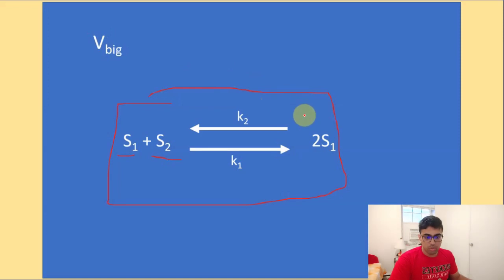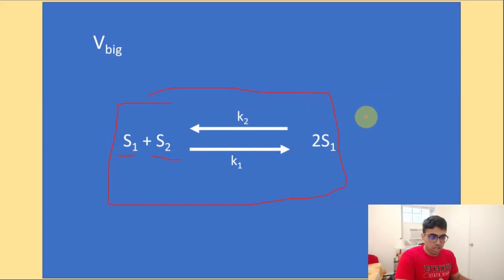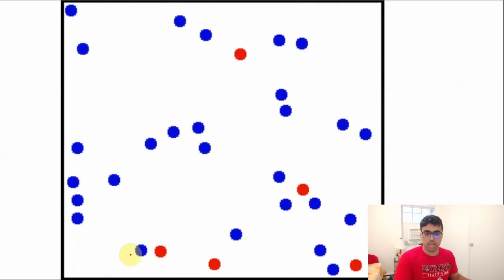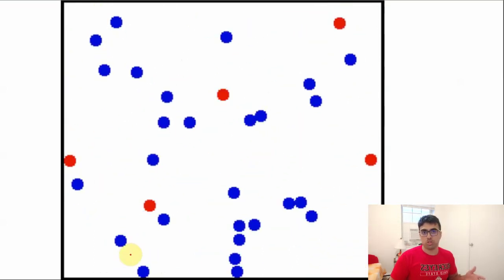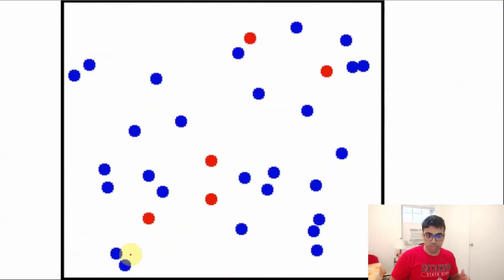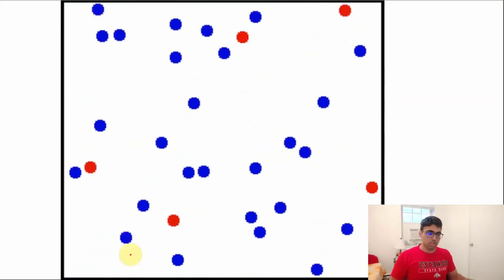Given some details like rate constant and reaction mechanism, you can get a deterministic ODE, numerically integrate it, and solve it — which is what we have been doing so far on this channel. However, when we look at a small region and zoom into a really small area, we can see that molecules collide and form new species, instantaneously producing products upon collision.